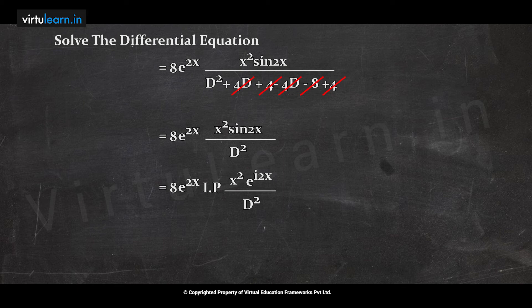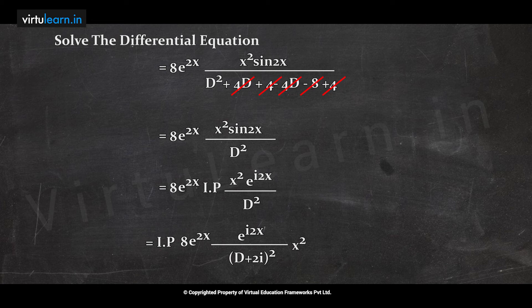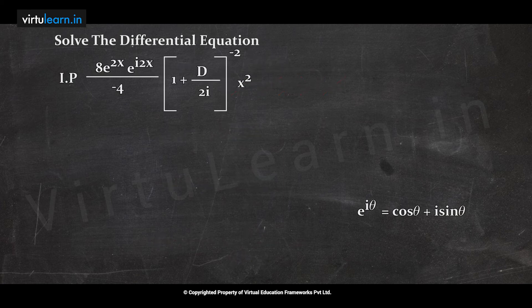This is again in the form e^(ax)·v(x), so write e^(i2x) outside and replace D by (D + 2i). This gives: Im[8e^(2x) · e^(i2x) · 1/(D + 2i)² · x²]. Since 2i is the coefficient, replace D by (D + 2i).